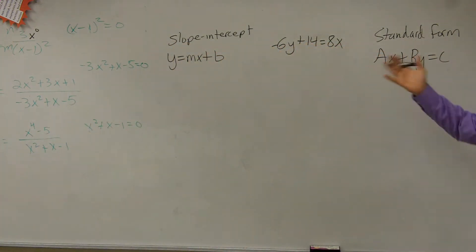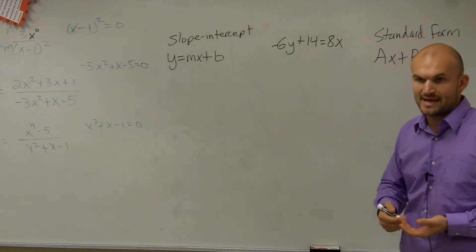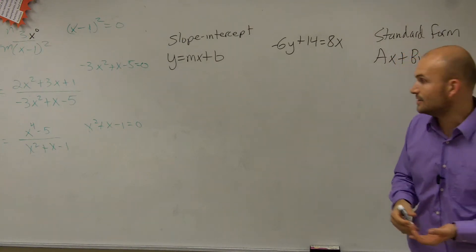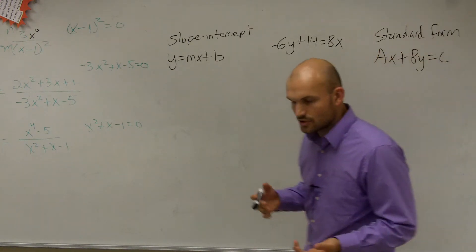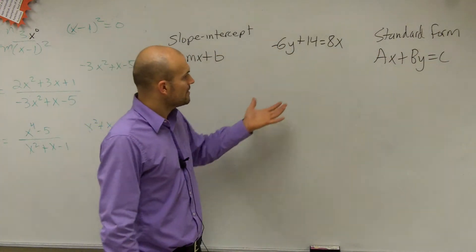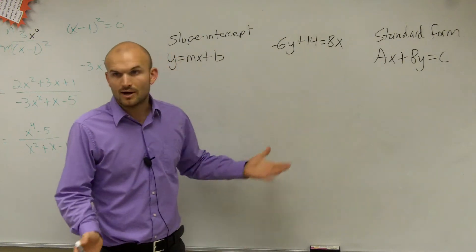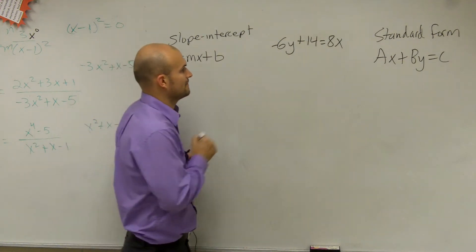So slope-intercept form is y equals mx plus b. Standard form is ax plus by equals c. So to put it in standard form, the main thing we need to do is put our x and y on the same side.